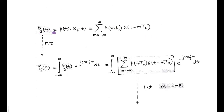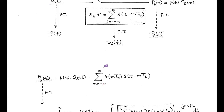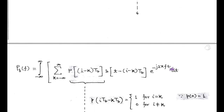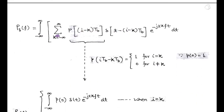The sampled signal p_delta(t) can be written as summation of p(m*Tb) times delta(t minus m*Tb), taking limit m equals minus infinity to infinity. Here, p(m*Tb) is the sampled version of received pulse p(t). Taking the Fourier transform of p_delta(t), represented by P_delta(f), it equals the integration of p_delta(t) times e to the power minus j2*pi*f*t dt, limit t equals minus infinity to plus infinity. In place of p_delta(t), we write the summation of p(m*Tb) times delta(t minus m*Tb). Next, we assume m equals i minus k in order to define the Nyquist criteria.